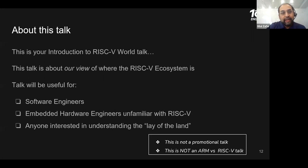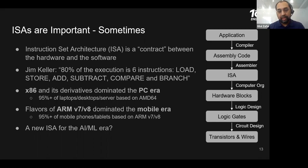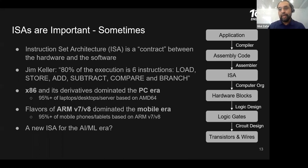Before we talk about the state of the art in RISC-V, let's talk about instruction set architectures — why they're important or why they're not. An instruction set architecture is a contract between the hardware and the software; it's the language in which software speaks with hardware. The high-level software gets compiled into these low-level instructions that the hardware understands. There's a famous saying from Jim Keller — architect at AMD, Intel, and Apple — that 80% of execution happens on six instructions: load, store, add, subtract, compare, and branch.